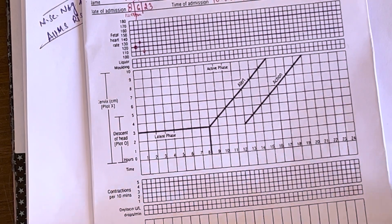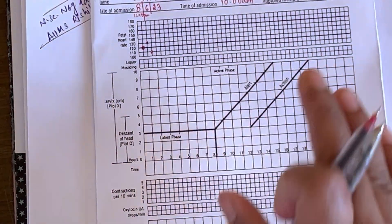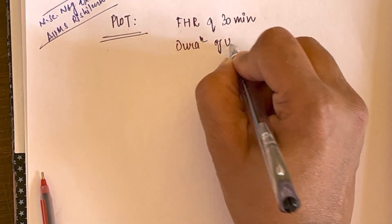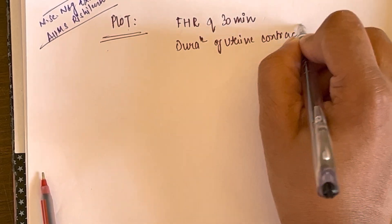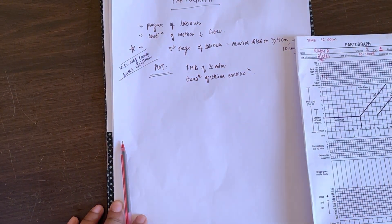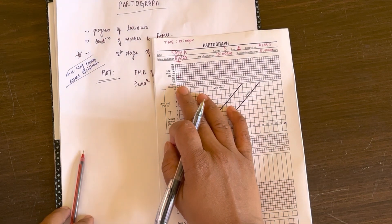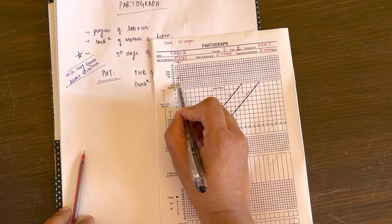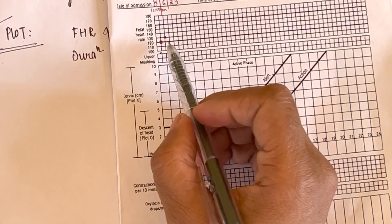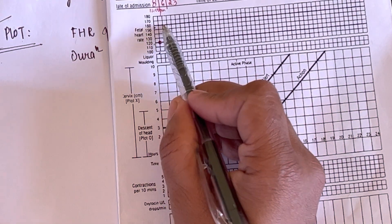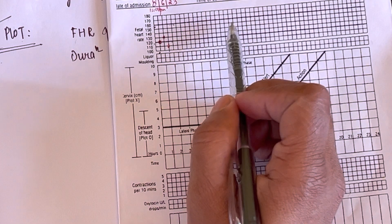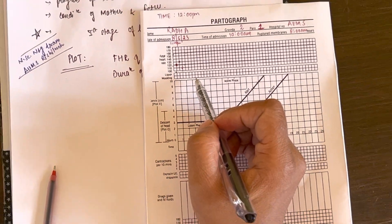You also have to count the uterine contraction — specifically the duration of the uterine contraction. Now, how do you know the fetus is in distress? If the FHR comes below 120 or goes above 160 — you can see there are two bold lines, one at 120 and one at 160. Anything below 120 or above 160 is considered an abnormal finding and can be regarded as fetal distress.